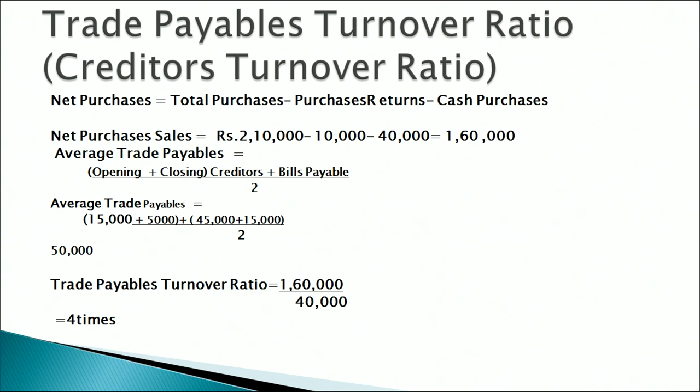Therefore, the trade payables turnover ratio is 1,60,000 divided by 40,000, which equals 4 times. This is moderately high and a good indicator for creditors to continue supplying on a credit basis. A supplier is always looking at the speed with which they are being paid off on average during the year — it effectively tells them that their payments are secure and will be made on time.